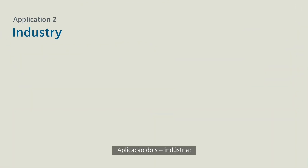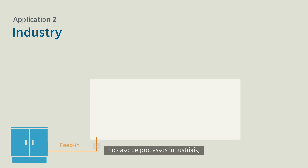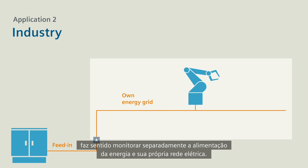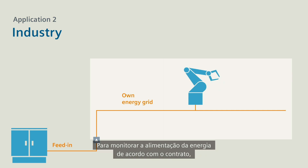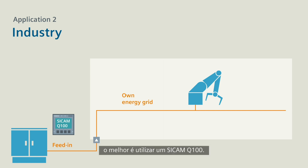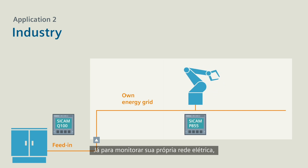Application 2: Industry. For industrial processes, it makes sense to separately monitor the feed-in of energy and your own energy grid. For monitoring the fed-in energy according to contract, it is best to use a CCAM Q100. Monitor your own energy grid with a CCAM P855, for example.